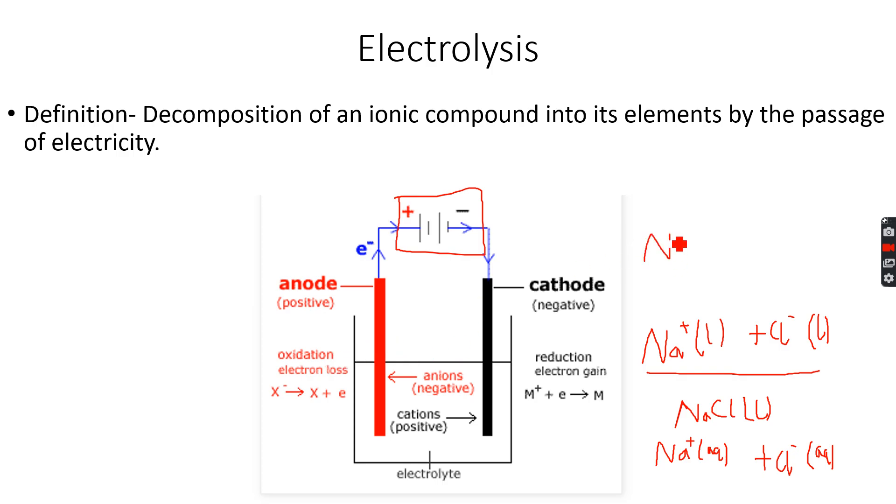So at the cathode, redox reaction comes in. Since the cathode has electrons that have come from the negative terminal, the positive ions, which are the cations, can receive the electrons and form the metal. The sodium ions can receive the electrons and form sodium metal. This is a reduction reaction because reduction is the gain of electrons. Na+ has gained electrons and sodium has formed. So you will see deposits of sodium metal here on the cathode.